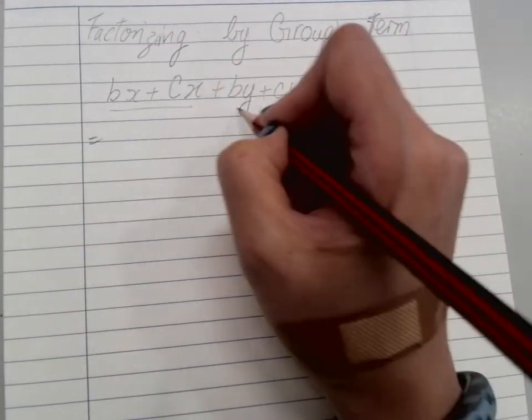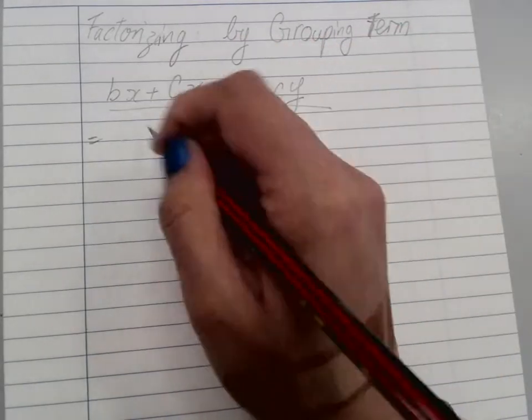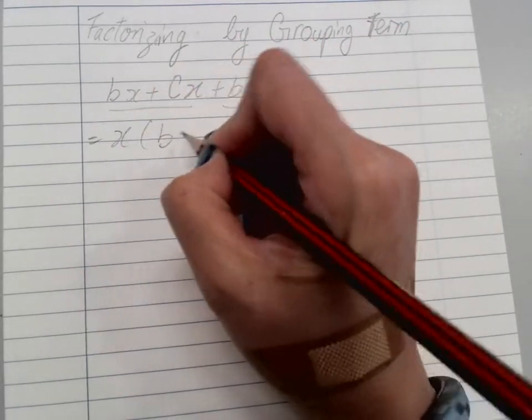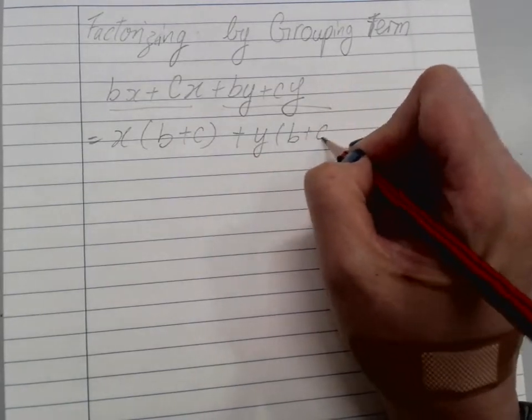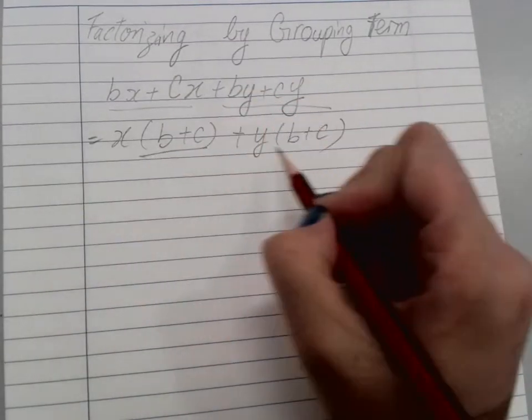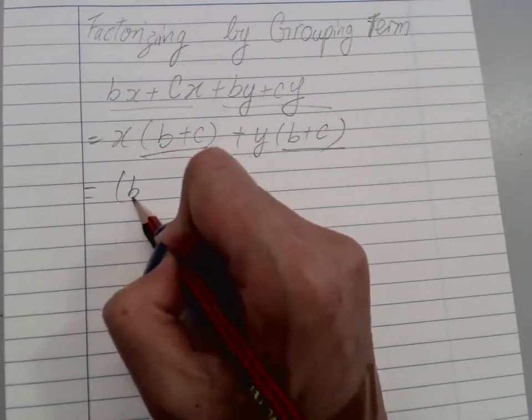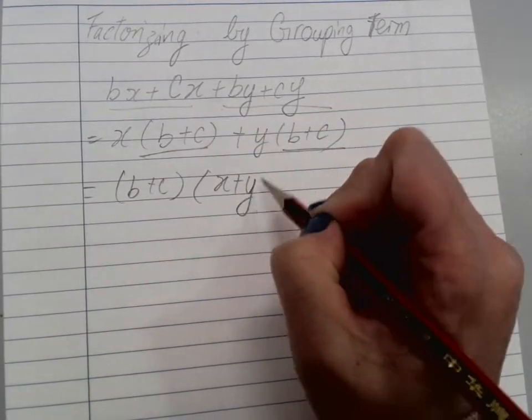First of all, I can see this one with x and this one both with y. So I take x out and y out, and got b plus c. Now I have a common factor. So I'm going to take b plus c as the common factor with x plus y left over.